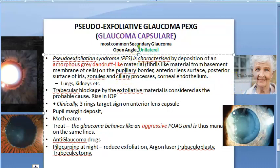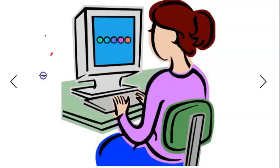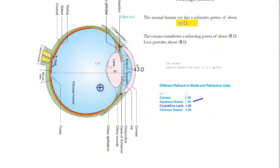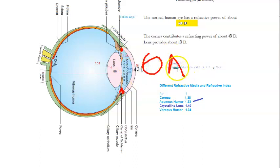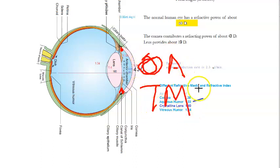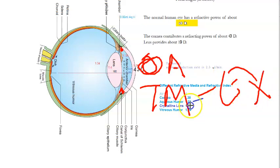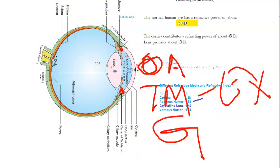Basically, some exfoliation is happening and all this exfoliatory material is blocking the angle — so the angle is open, open angle. The trabecular meshwork is getting clogged by this exfoliatory material, and this is going to lead to raised intraocular pressure, which can lead to glaucoma.